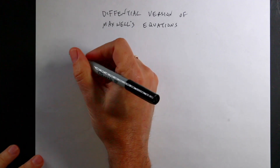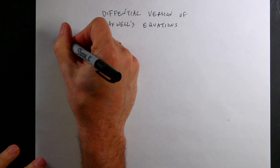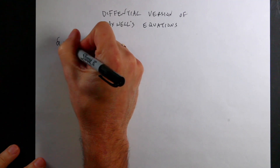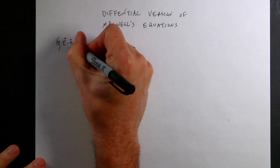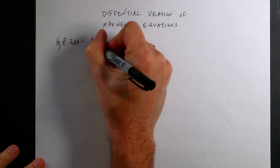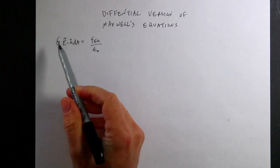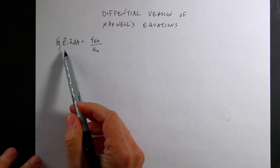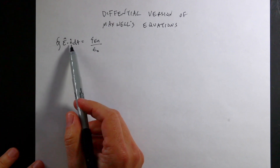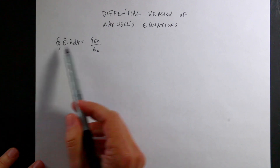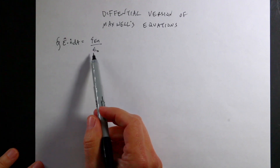The first of Maxwell's equations is Gauss's law. It says the integral of E dot N-hat dA equals Q-enclosed over epsilon-naught. This says that the electric flux through some closed surface is equal to the total charge inside divided by epsilon-naught. That's Gauss's law.